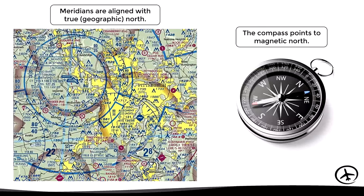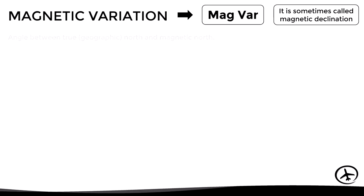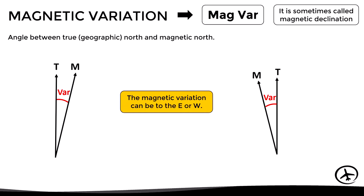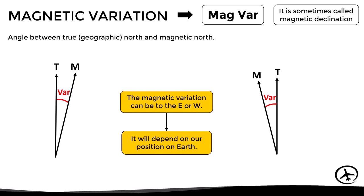This difference between both poles is known as the magnetic variation, abbreviated as Mag Var, and sometimes referred to as magnetic declination. It is defined as the angle between true or geographic north and magnetic north. This variation can be to the east or to the west depending on the relative position of the poles, which in turn depends on our position on earth.